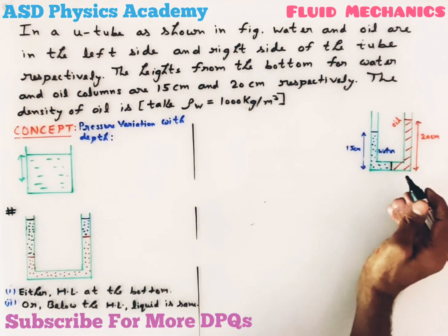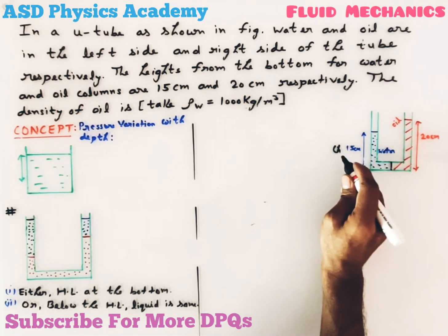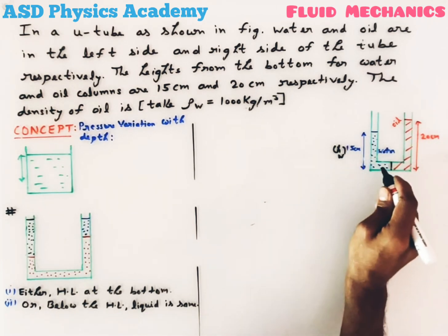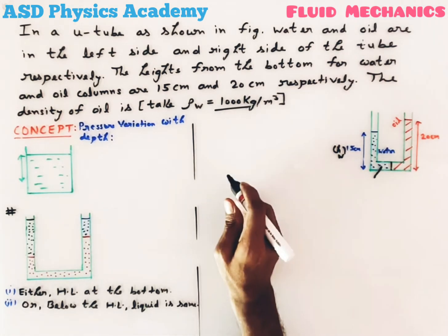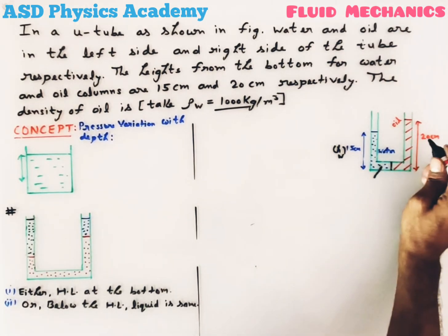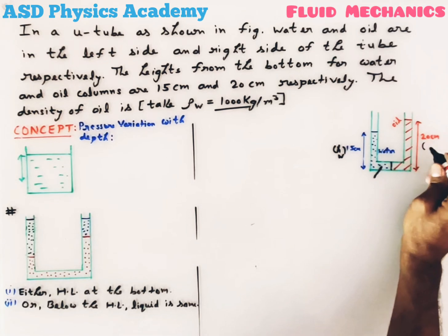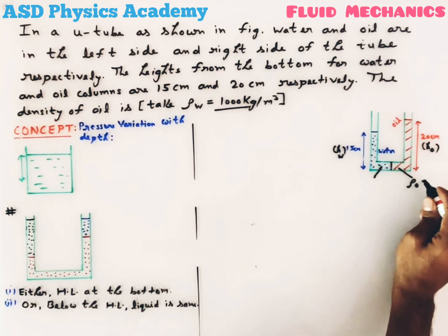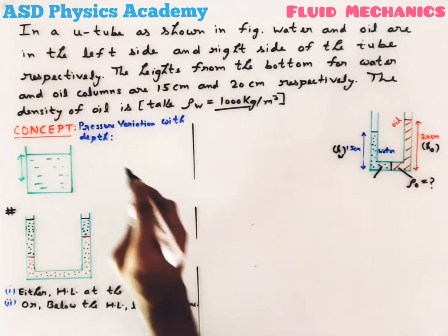On the left side of the tube, the depth of the water column is 15 centimeters — let's represent it as h_w — and the density of water is given. On the right side, the depth of the oil column is 20 centimeters, represented as h_0, and we have to calculate the density of oil.